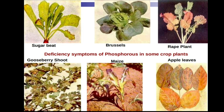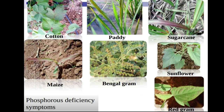Visual symptoms of phosphorus deficiency can be seen in sugar beet, wheat, brussels sprouts, rape plant, gooseberry, and apple, where upper leaves turn purplish due to anthocyanin pigment development leading to necrosis. In paddy, upper leaves turn yellow or purplish. In maize, bengal gram, sunflower, sugarcane, and red gram, upper leaves also develop anthocyanin pigment, causing necrosis and short internodes.